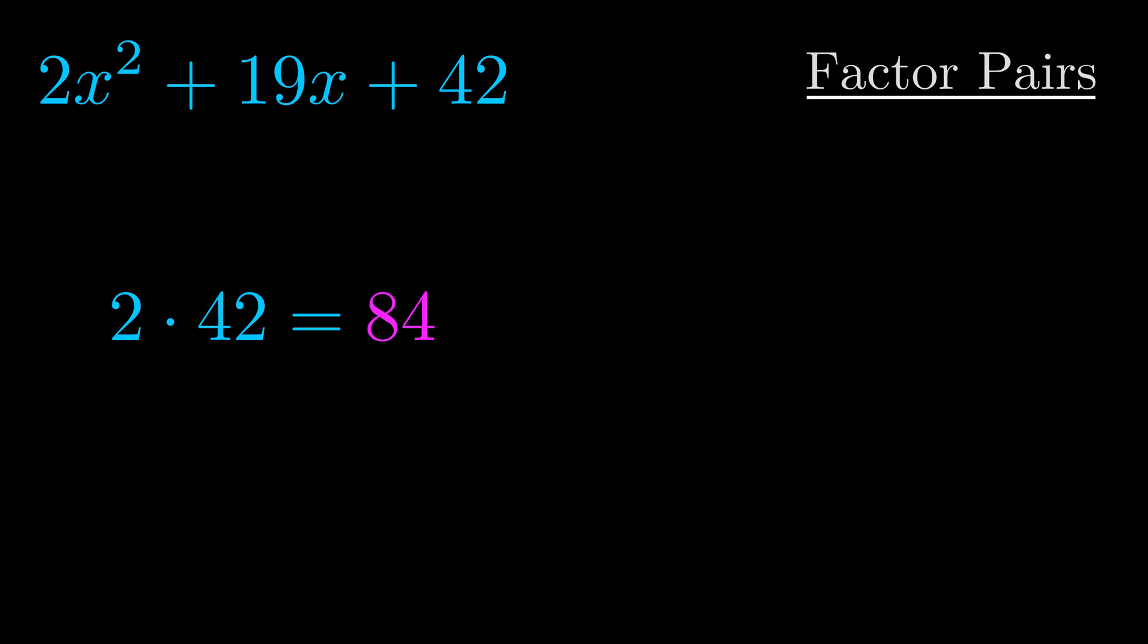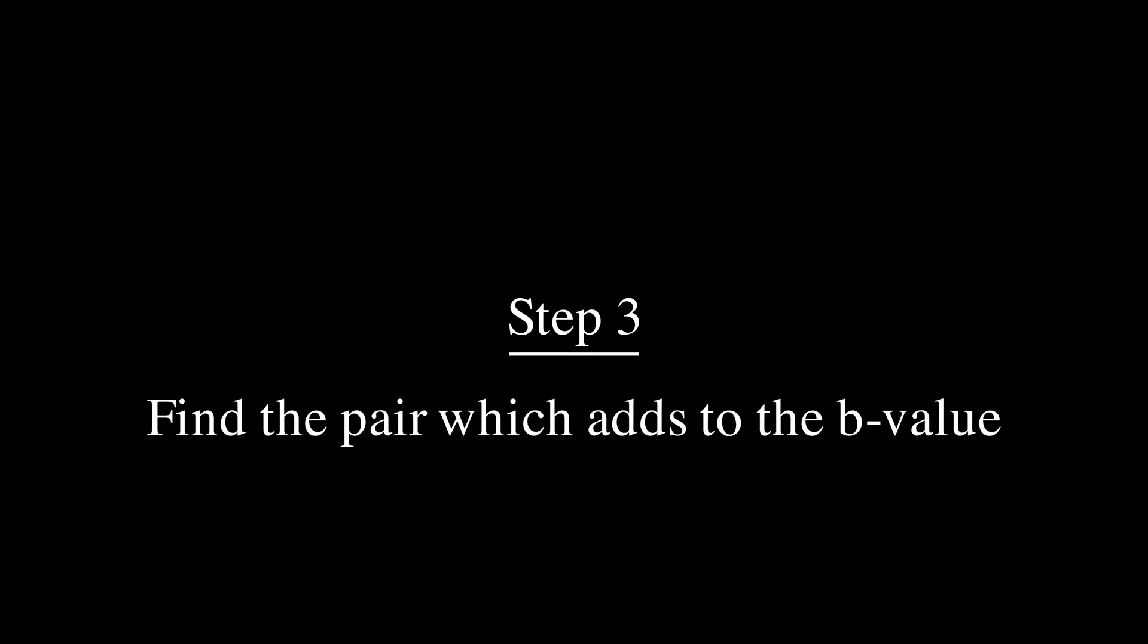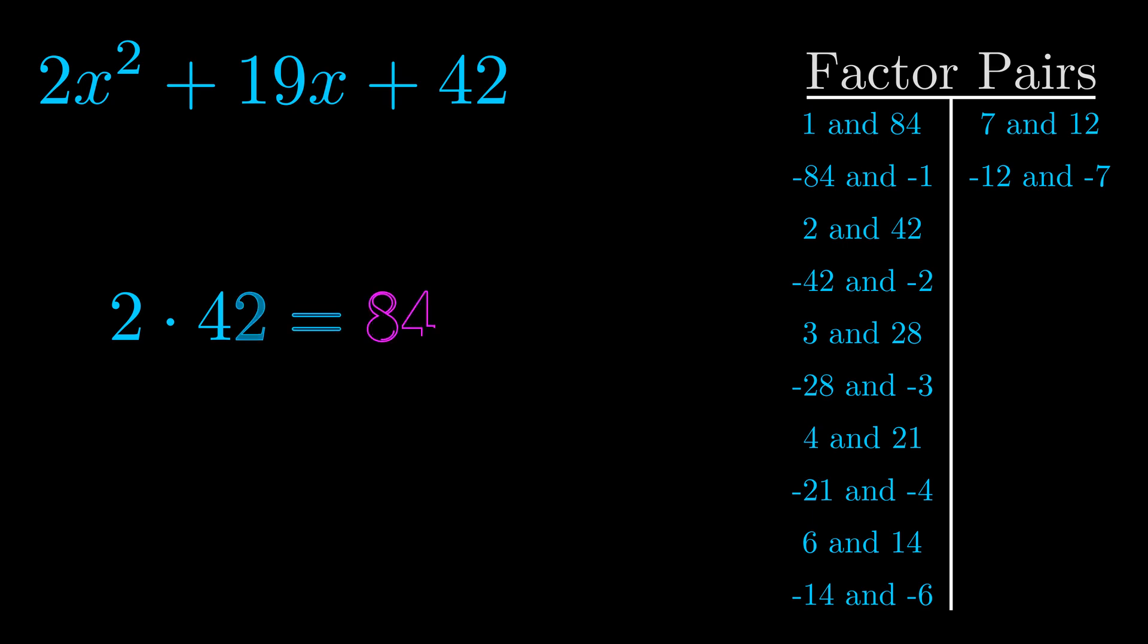Okay, here's what I came up with. Now once you have these factor pairs, the goal is to find which of these pairs adds to the b value. The b value is the coefficient on the x term. That's the middle term, the one that we haven't done anything with yet. And really, this is the only factor pair that we need.